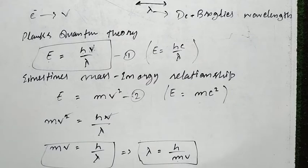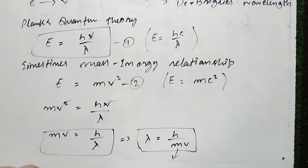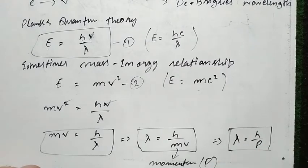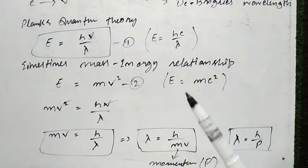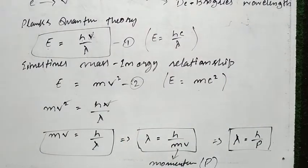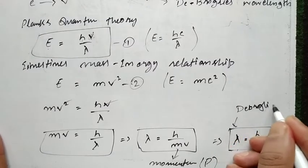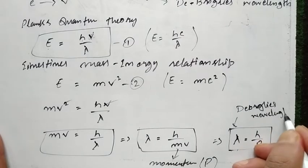Mass times velocity is known as momentum, represented by p. So we can write the relation: λ = h/p, where p is the momentum of the electron, equal to mass times velocity. This is the de Broglie wavelength of the wave associated with the matter — in this case, the electron.